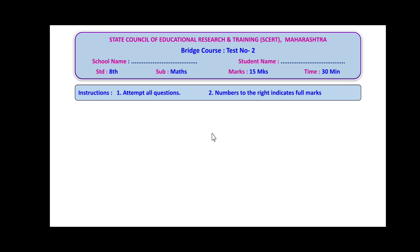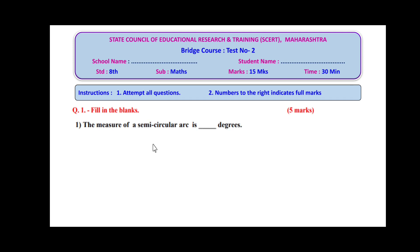Let us start the test. Question number one is fill in the blanks — five marks, five sub-questions. Sub-question one: the measure of a semicircular arc is ___ degrees. The angular measure of a full circle is 360°, and a semicircular arc is half of 360°, so the answer is 180 degrees.